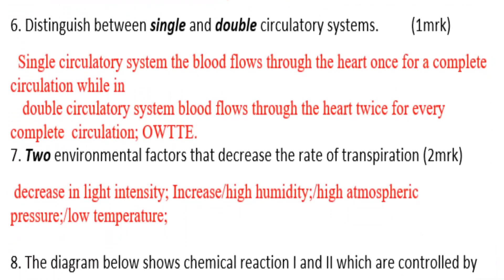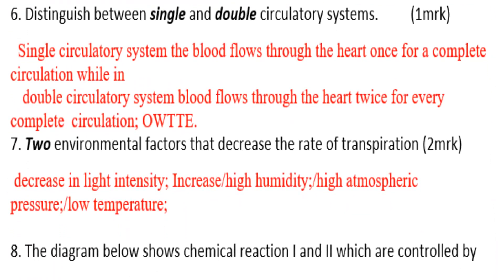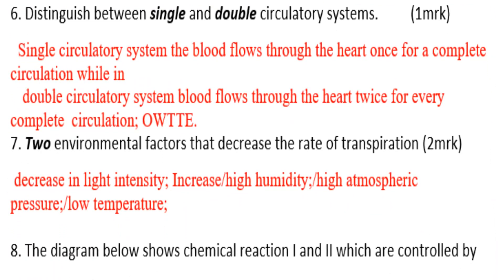Distinguish between single and double circulatory systems. In a single circulatory system, blood flows through the heart once for a complete circulation. In a double circulatory system, blood flows through the heart twice for every complete circulation.